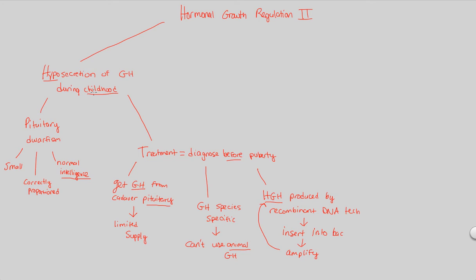The other option for hormonal growth regulation problem would be not hyposecretion, but hypersecretion. So now we have hypersecretion of growth hormone. I'm not going to say it's in childhood specifically because there are two situations. In this overproduction of growth hormone, it can be during childhood, but it also can be during adulthood. During childhood, if you have hypersecretion of growth hormone, what's going to eventually happen is gigantism.